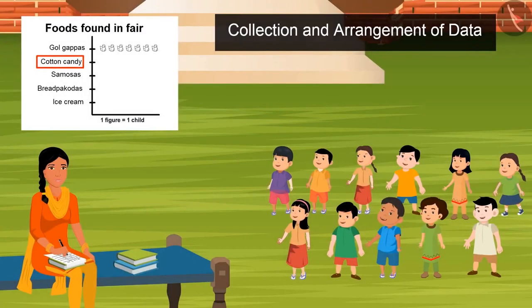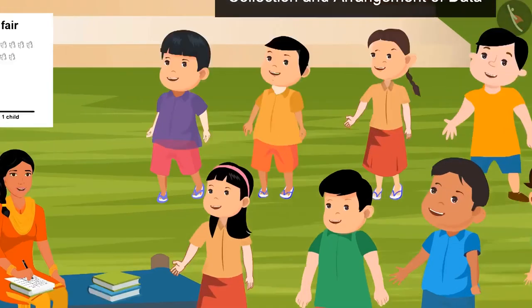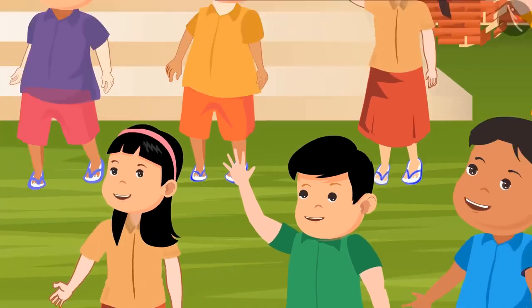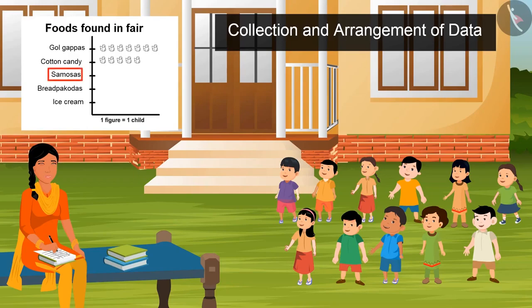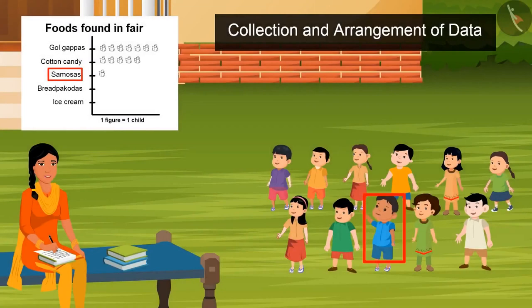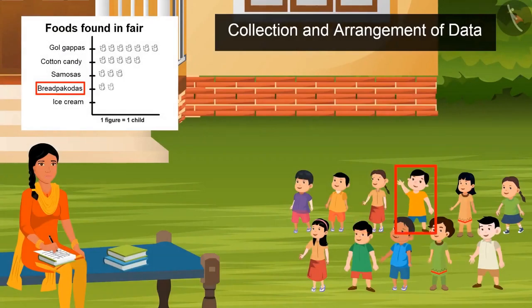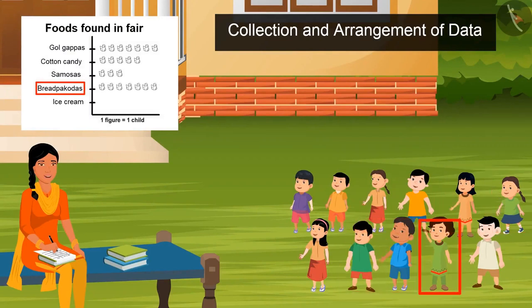Who all wants to eat cotton candy? One, two, three, four, and five. Five, six, and seven. One, two, three, four, five, five, six, and seven, eight.